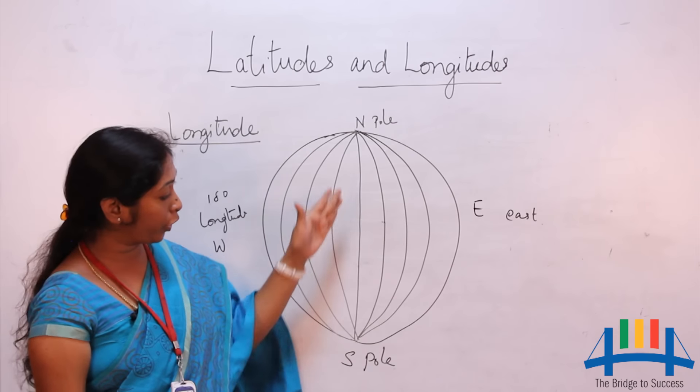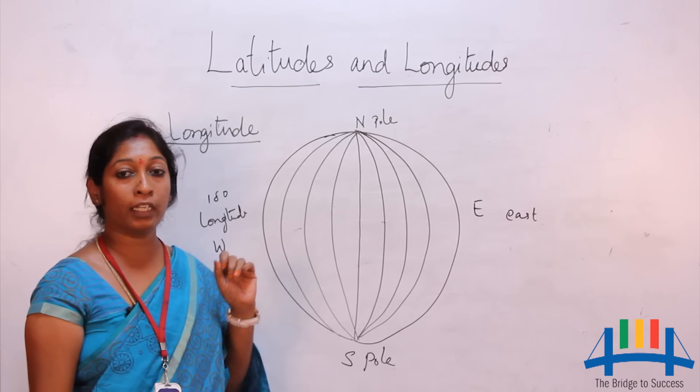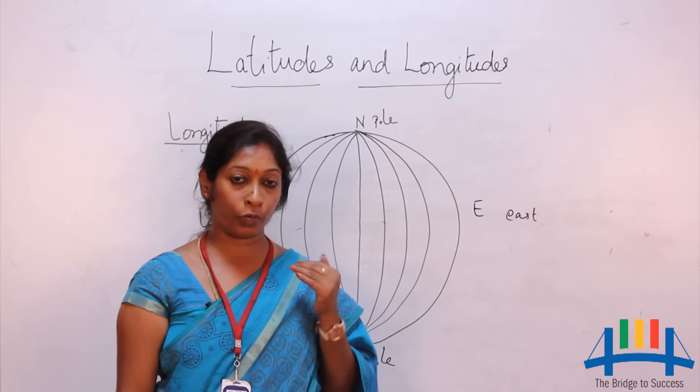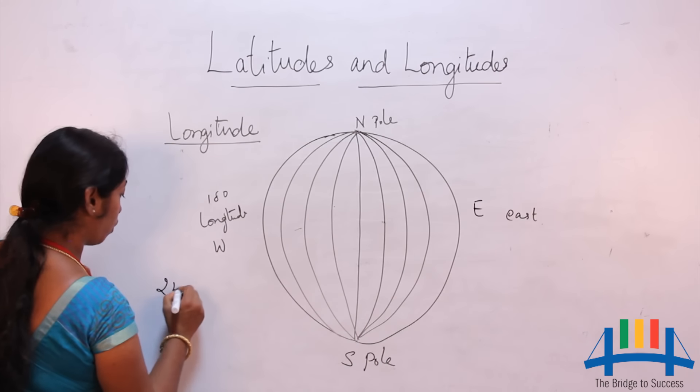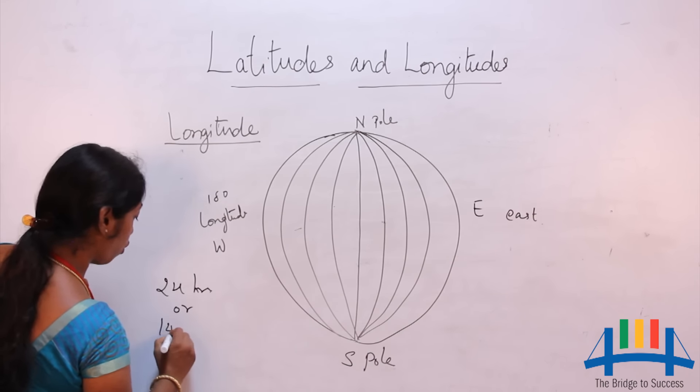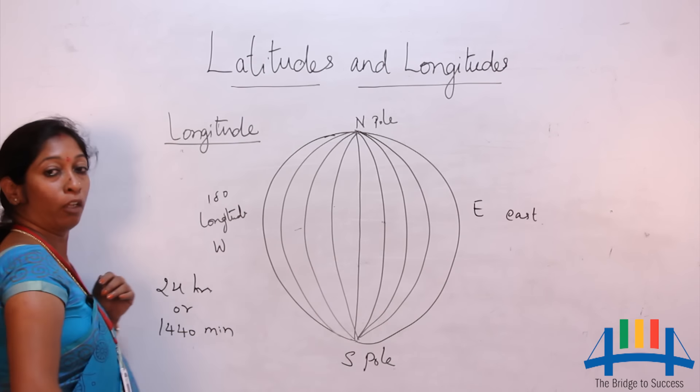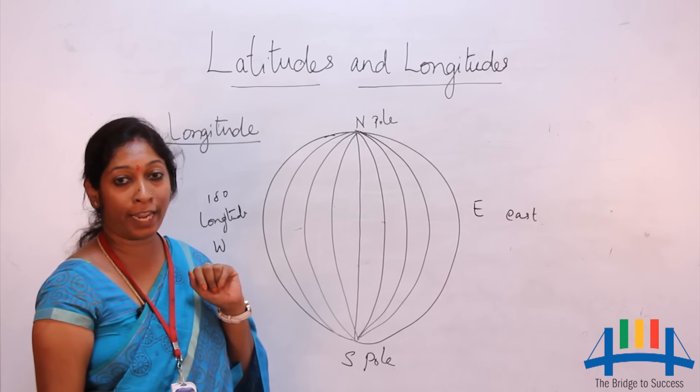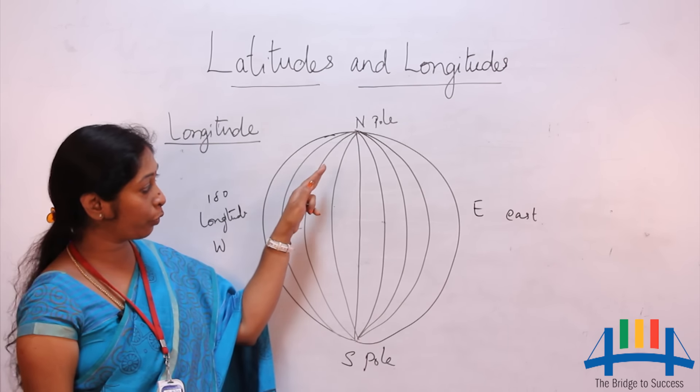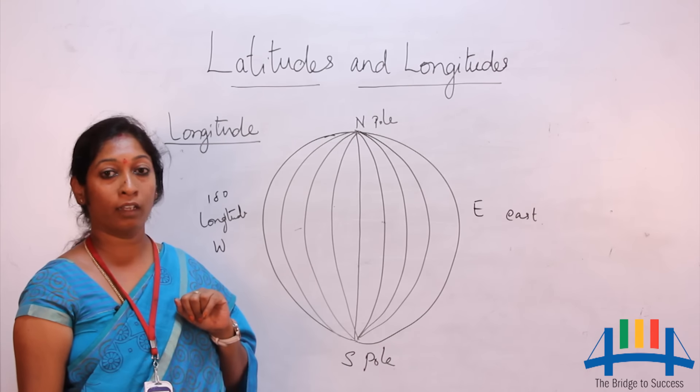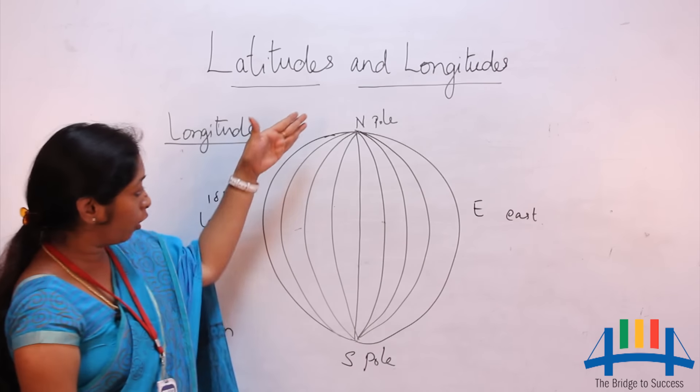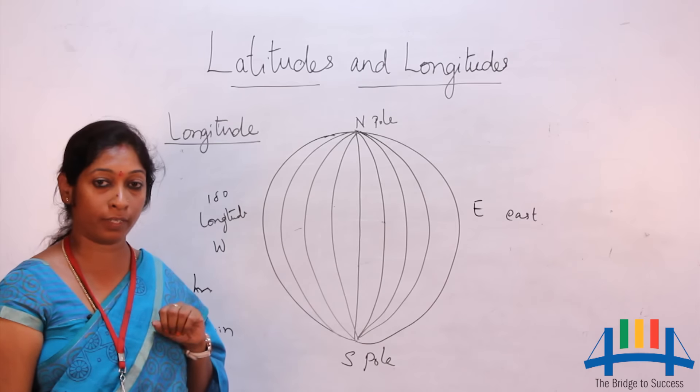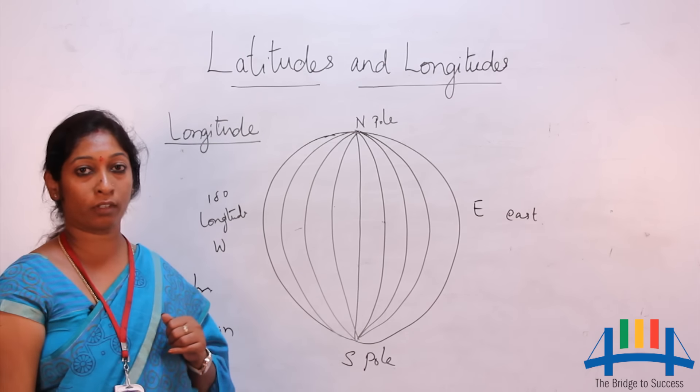If we know the longitude and latitude of a place, we can easily calculate the time. Earth takes 24 hours, or 1,440 minutes, to complete one rotation. This means to rotate one degree, it takes four minutes. Each longitude is located at one degree, and if you know the longitude and latitude, it is easy to calculate the time of that particular place. That is all about latitudes and longitudes. Thank you.